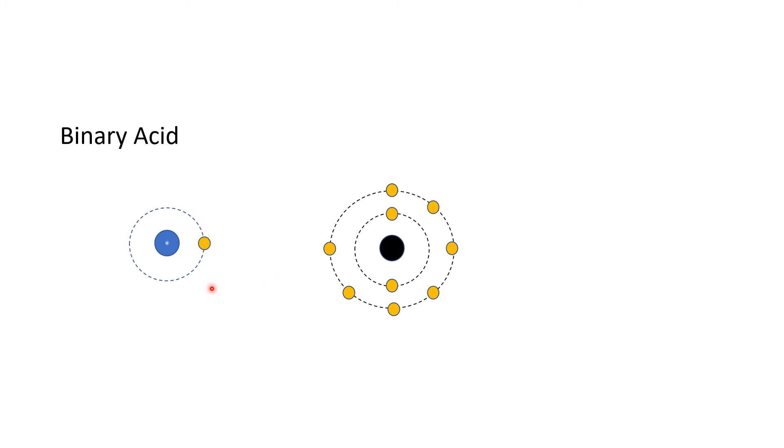Hydrogen now will share its lone electron with fluorine. Through covalent bonding, it will now form what we call a binary acid. The chemical formula for this binary acid is HF, or we name this as hydrofluoric acid.